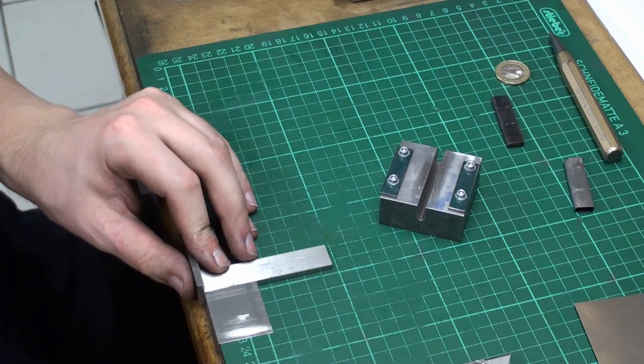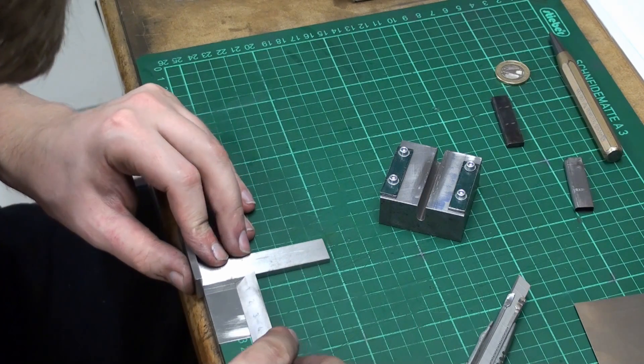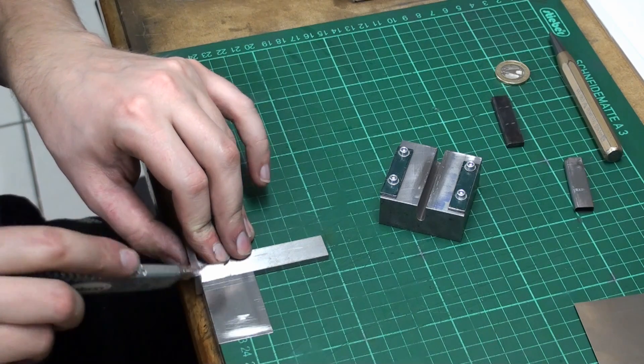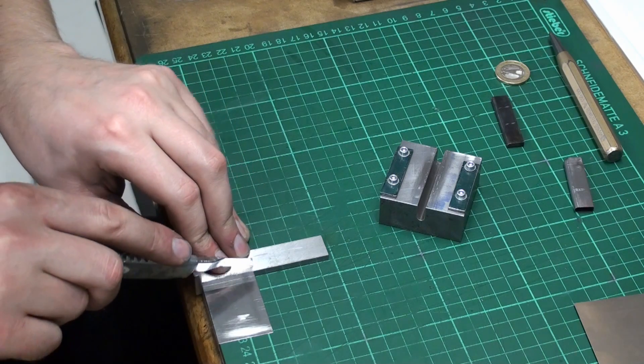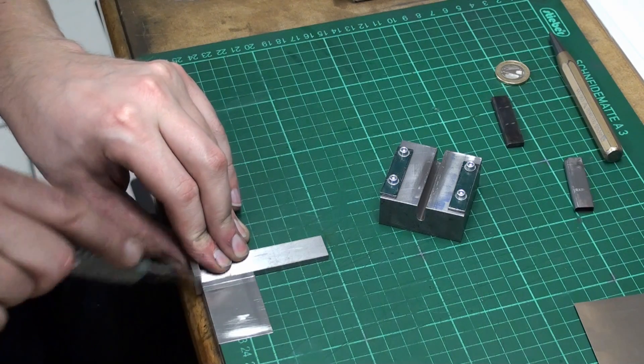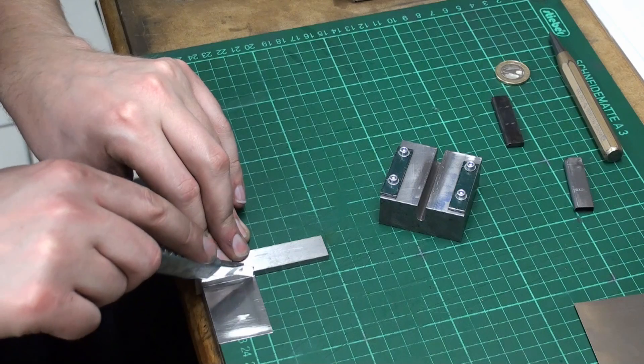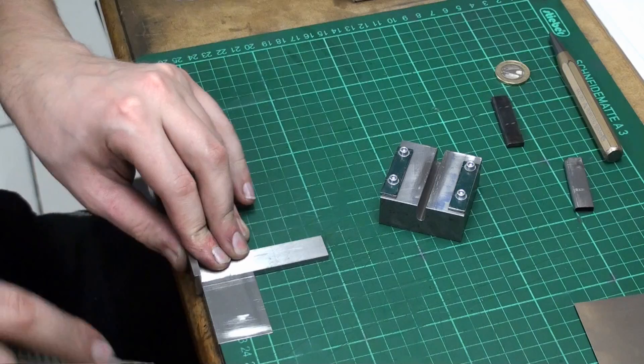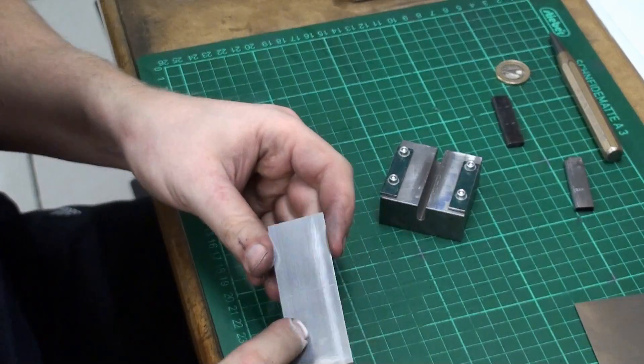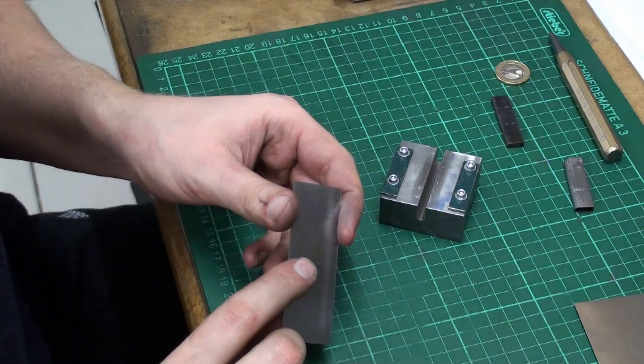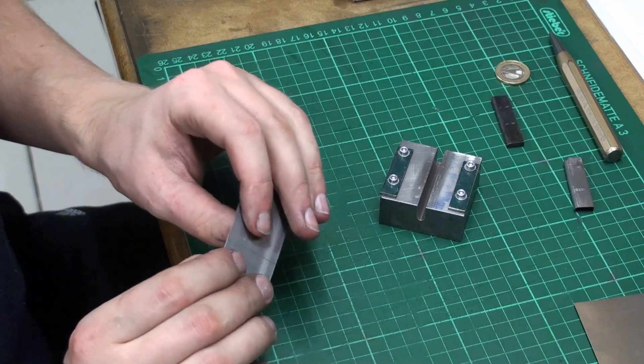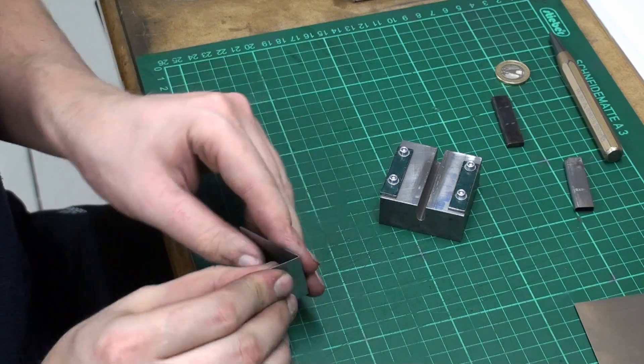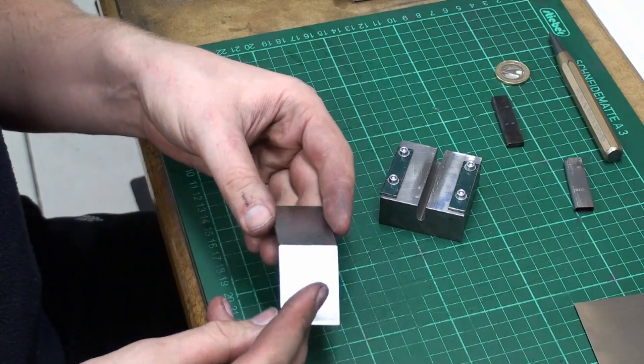I need a piece about 42 millimeters long. Aligning with a square, just scribe it a few times across. Then when you have a nice deep scribe you just bend it a few times and when it work hardens it breaks on the scribe line.